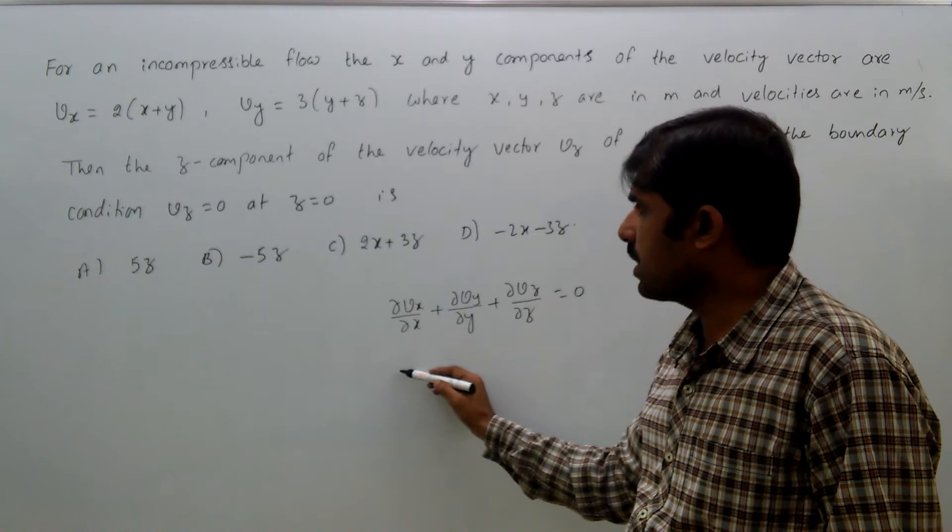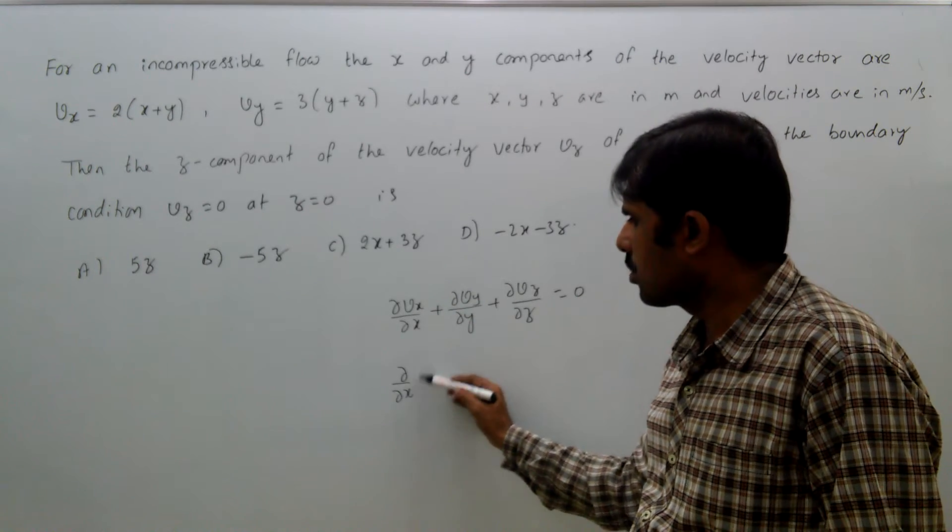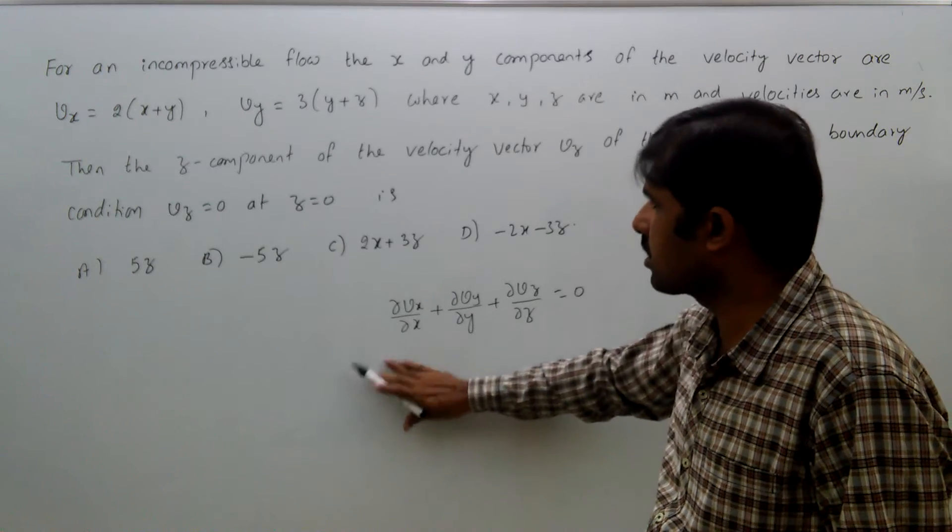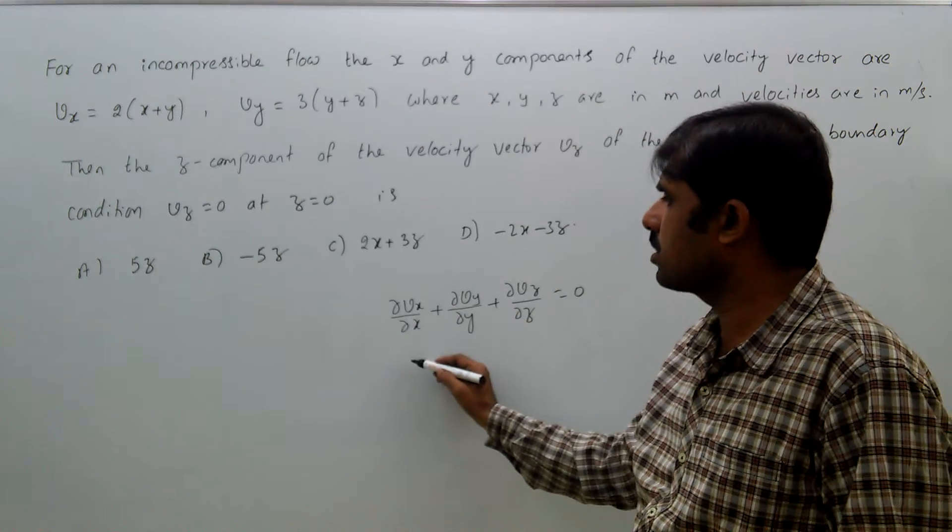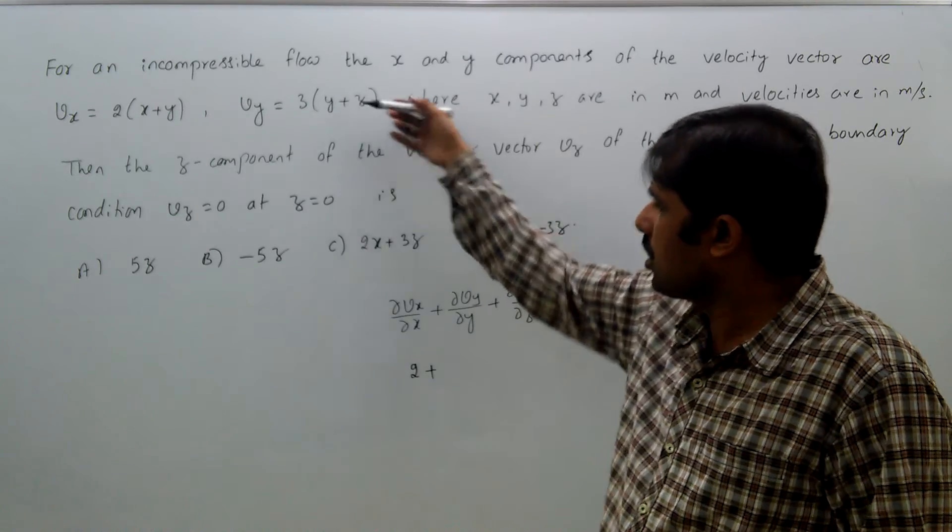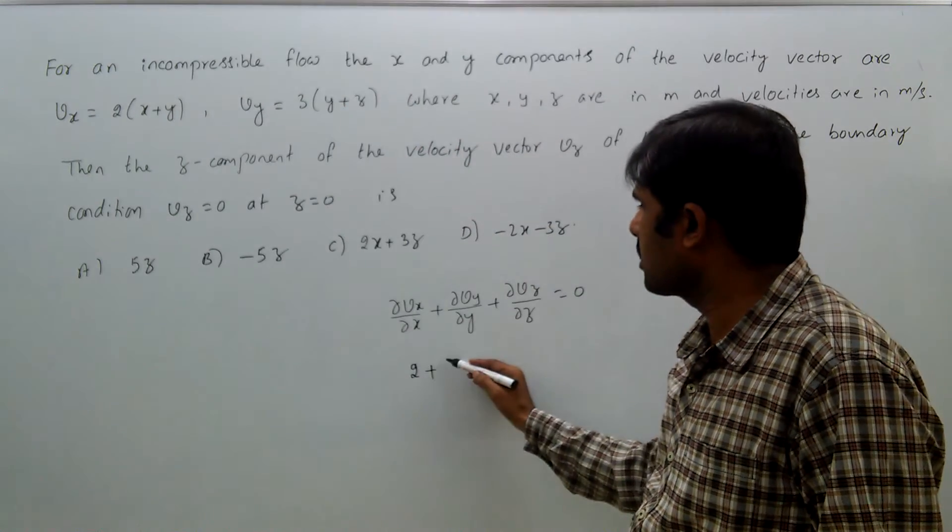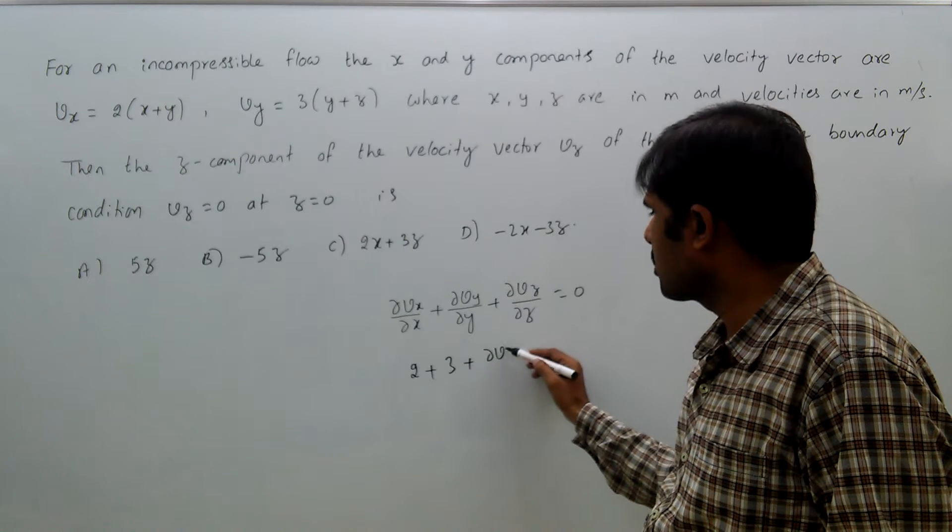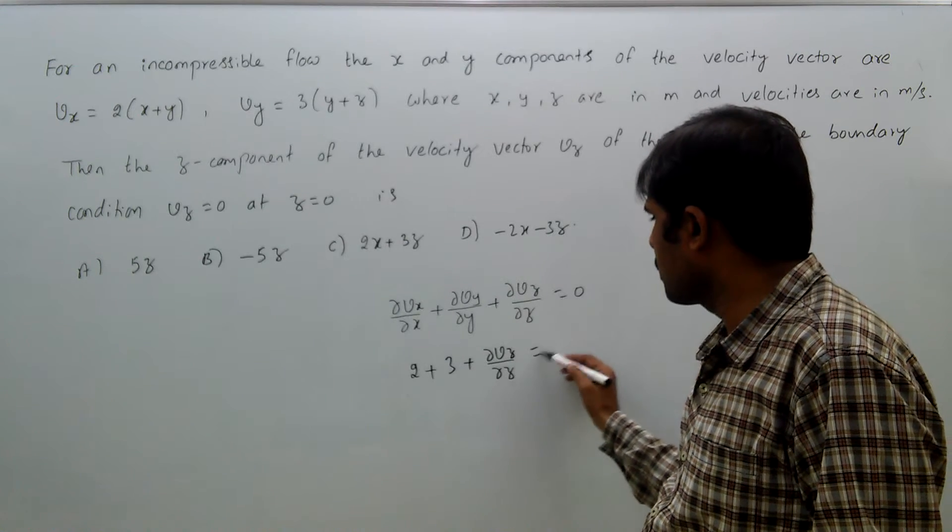∂vx/∂x means ∂/∂x of 2(x+y), that is 2, plus with respect to y, ∂vy/∂y, that means 3, plus ∂vz/∂z = 0.